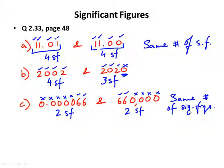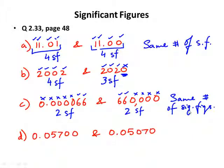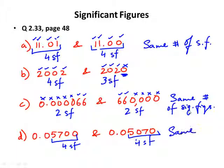Can you decide if 0.05700 and 0.05070 have the same number of sig figs? Yes, they do — both have four sig figs, because there is a decimal point making the trailing zeros significant. Same number of sig figs.